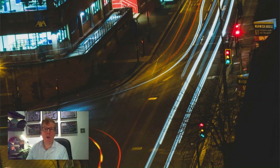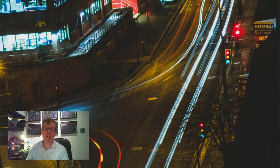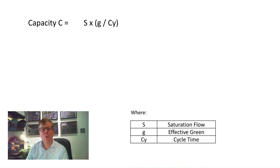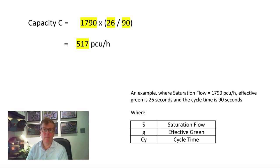The next parameters relate to capacity. These differ from saturation parameters because they account for the way in which the proposed traffic signals will operate. As incremental changes are made to signal operation during design, this impacts the capacity parameters. The formula is: capacity = sat flow × effective green ÷ cycle time. In the example, sat flow of 1,790 PCUs/hr, effective green of 26 seconds and cycle time of 90 seconds gives a capacity of 517 PCUs per hour for that specific lane.